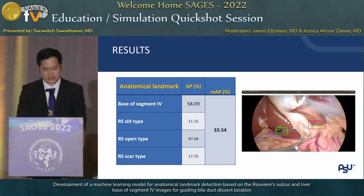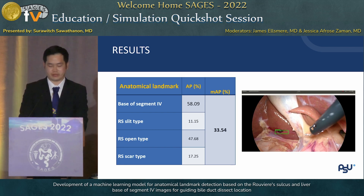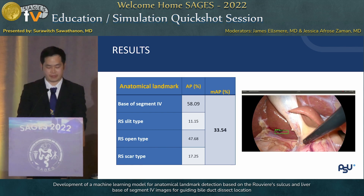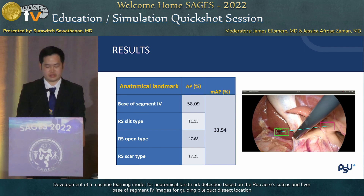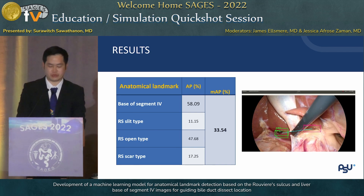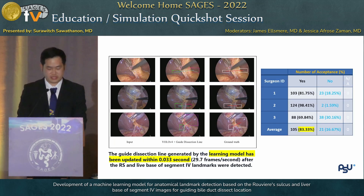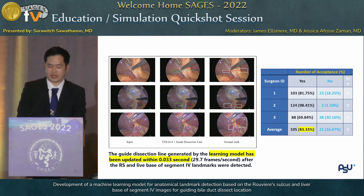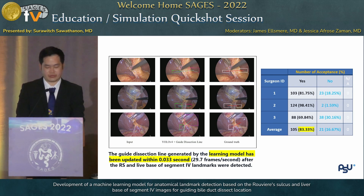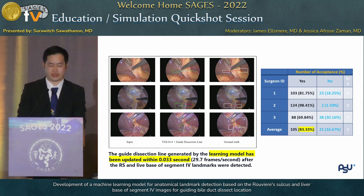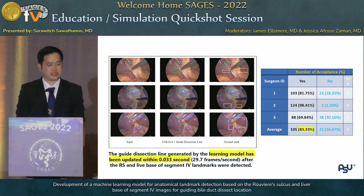This table summarizes the accuracy of the model in detection of the landmarks. The mean average precision is approximately 33.5 percent. Despite the fact that the mean average precision is not high, the guided dissection line was created almost immediately. We deployed the system in the operating room, and our three expert surgeons accepted the lines generated by the model more than 80 percent of the time.